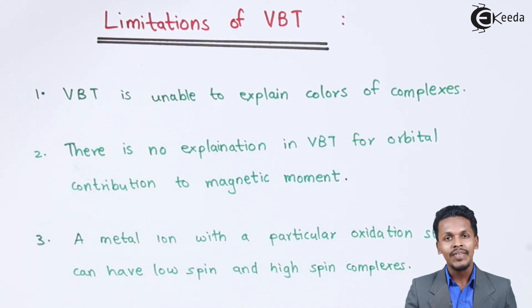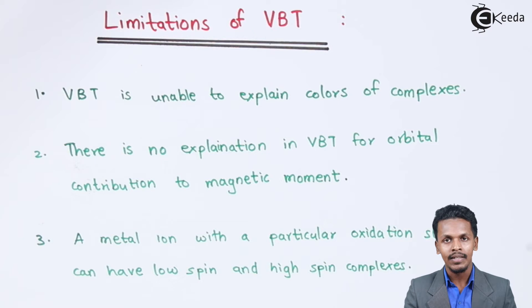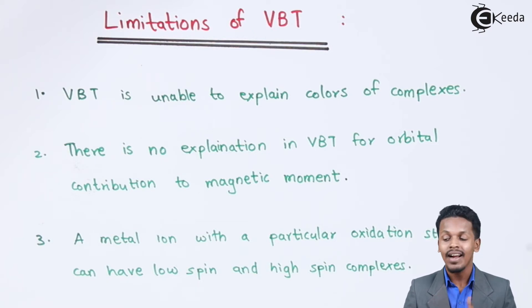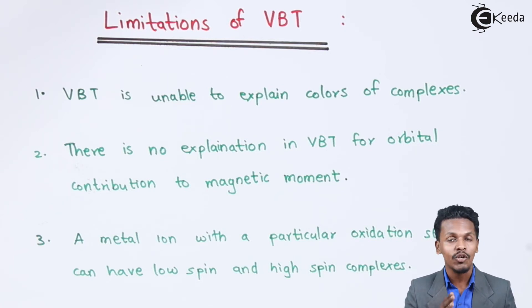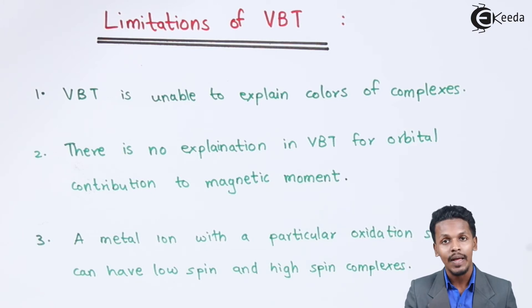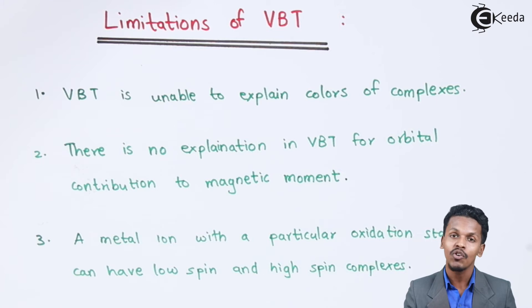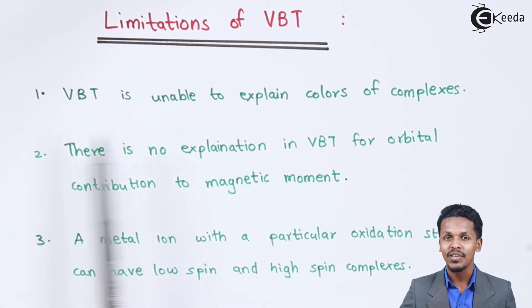We understand that d-d transition occurs in the d-block elements of the central metal ion. But in that case also we can't predict which color it would be exhibiting, because the colors exhibited by the complex depend upon the wavelength that has been absorbed by the metal ion or the complex ions. So that is not explained by valence bond theory.